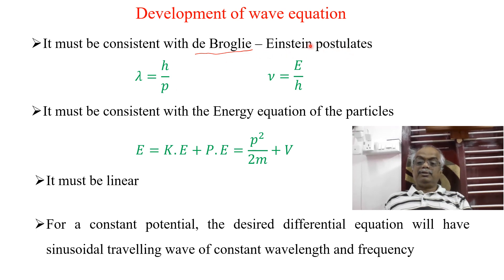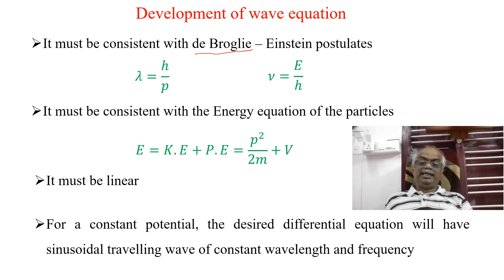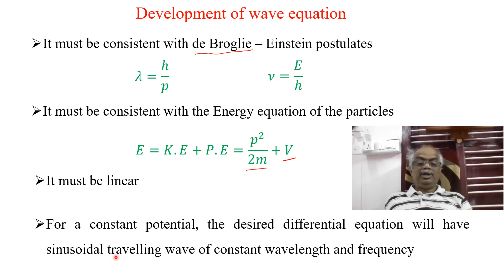However, according to Einstein, from the photoelectric effect, he identified that the wave behaves like a particle, and he developed the expression h nu is equal to E, or nu is equal to E over h. So, it must be consistent with the energy equation of the particle. That is, total energy is equal to kinetic energy plus potential energy. Here, the kinetic energy is p squared over 2m and potential energy is V. And it must be linear. For a constant potential, the desired differential equation will have a sinusoidal travelling wave of constant wavelength and frequency.